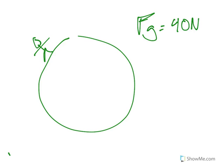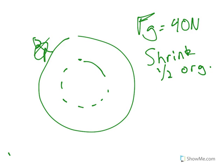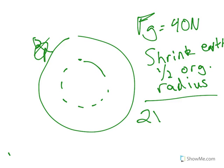It's currently 40 newtons. So what would happen if I shrunk the earth to half its size and then doubled my mass? So I'm going to shrink the earth to one half its original radius. And I am going to double my mass.